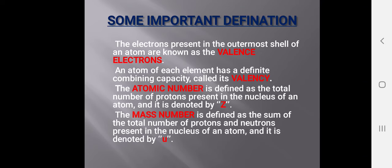Some important definitions in the chapter Structure of an Atom: Valence electrons are the electrons present in the outermost shell of the atom. Valency is the definite combining capacity of an atom. Atomic number is defined as the total number of protons present in the nucleus of an atom, and it is denoted by capital Z.